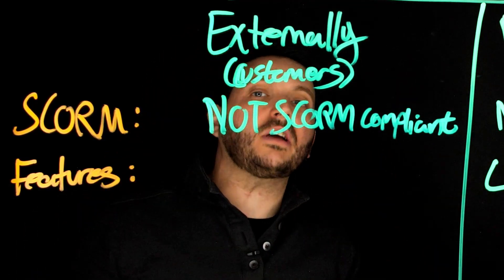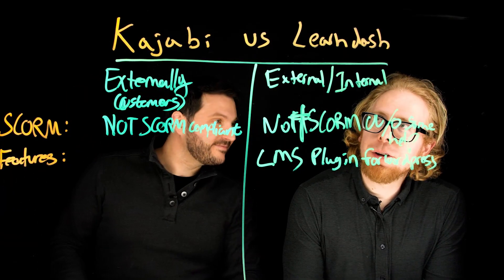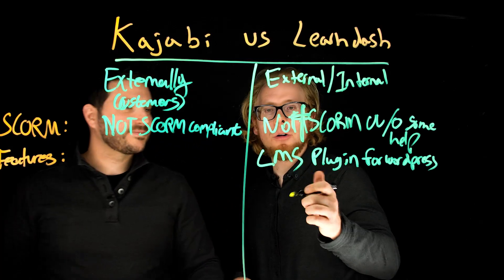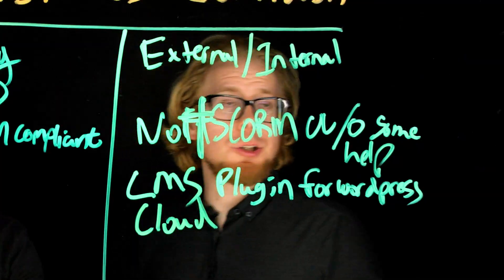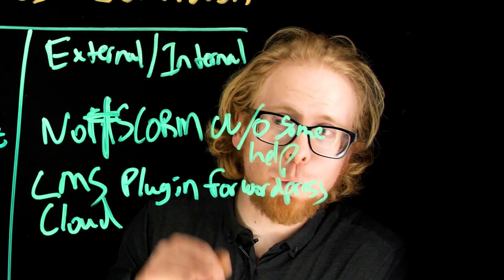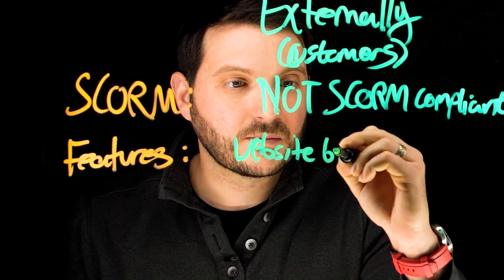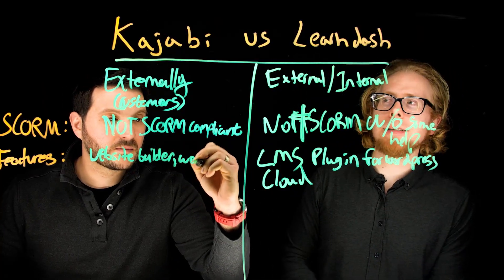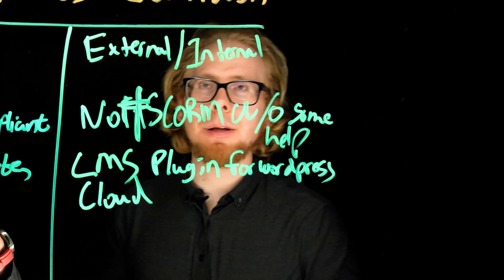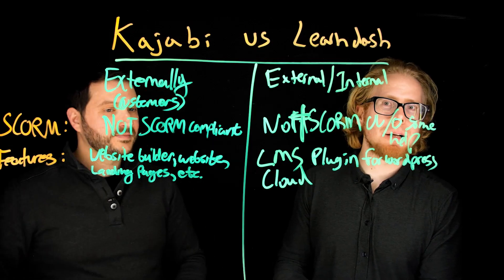If you already have a WordPress website, integrating LearnDash is easy. More recently, LearnDash also has something called the Cloud — a standalone LMS version that doesn't have to live in WordPress. Kajabi, on the other hand, does everything WordPress does as a website builder — templates, landing pages, email marketing — and it does everything LearnDash does and more. Kajabi also has payment processing built in; LearnDash does not, requiring a WooCommerce integration.